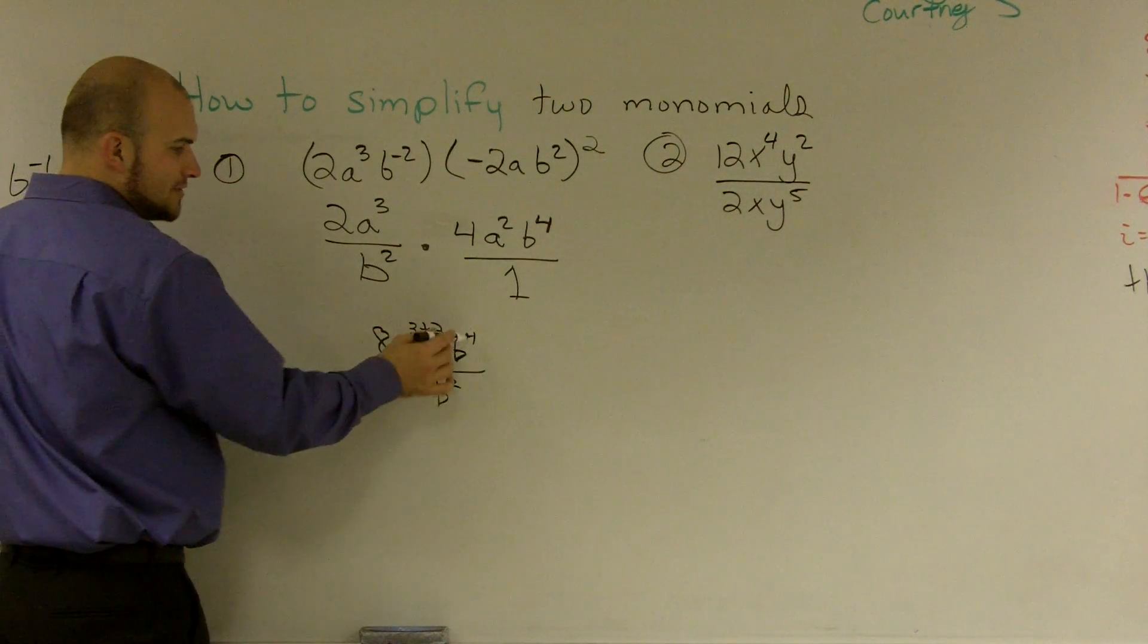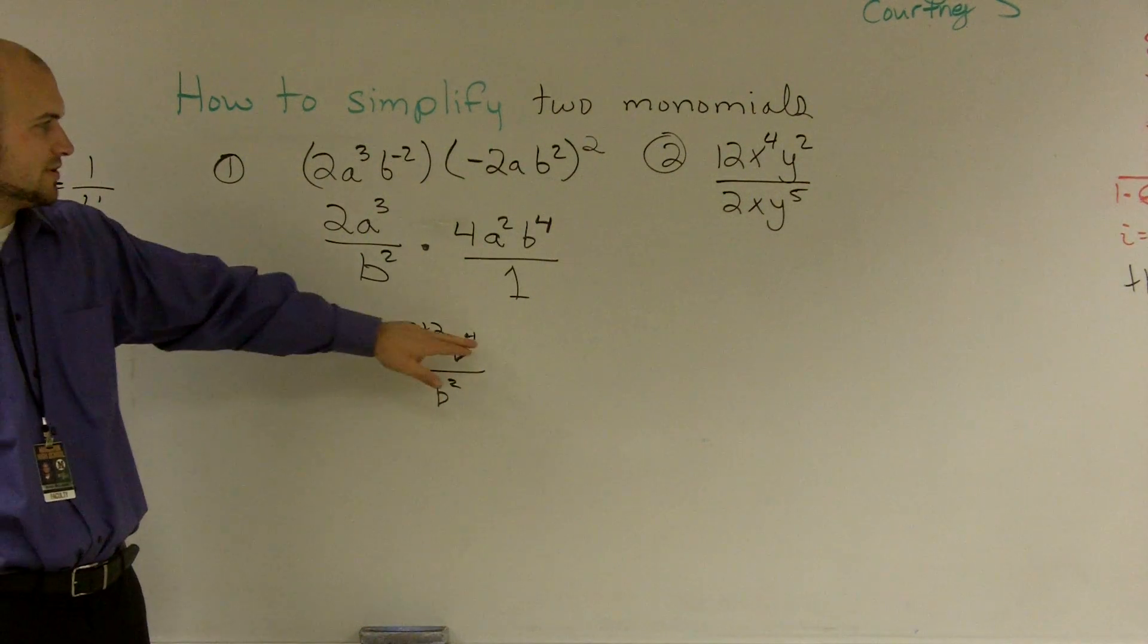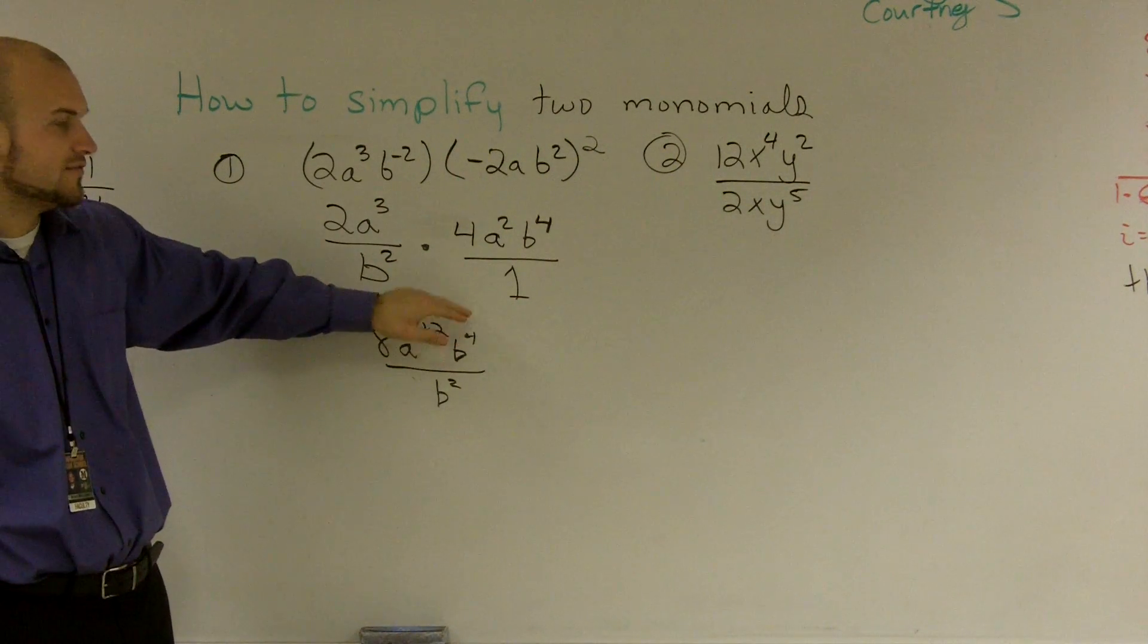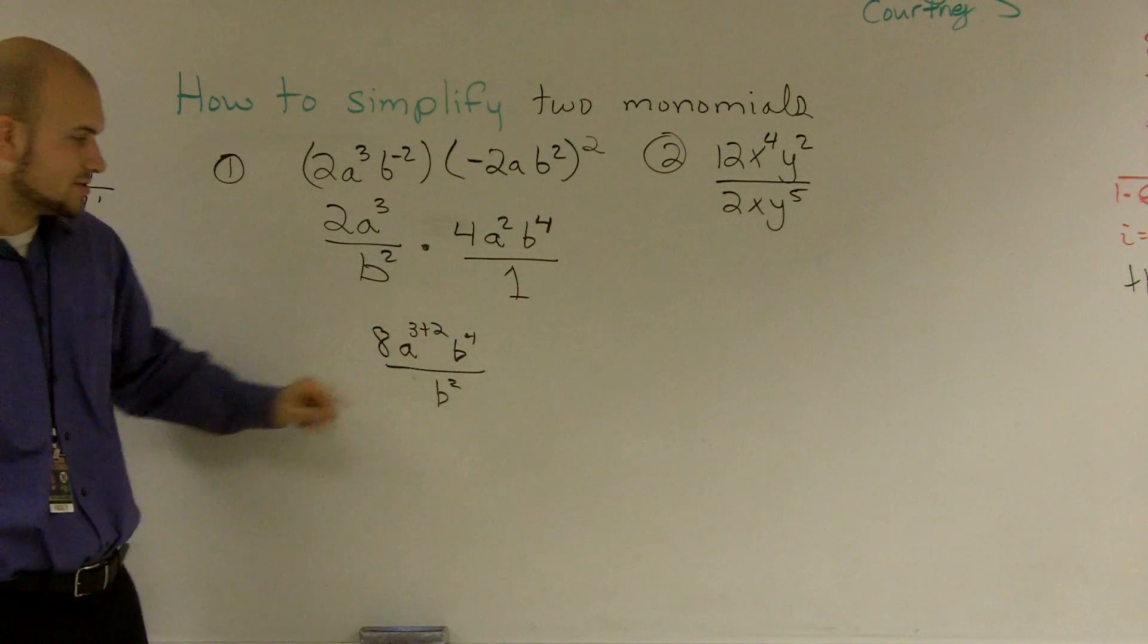Obviously, here, I now know I can put this to the, if I was going to put that back up, it'd be to the negative 2. Right? So essentially, I can do b to the 4 minus 2, because I'm dividing my bases.